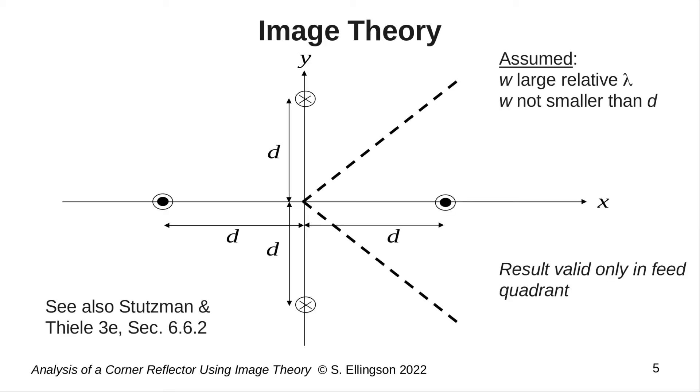Okay, so here's how we do this problem using image theory. Image theory tells us to replace the corner reflector with three additional line sources, as shown here. Each line source is the same distance from the origin, and the upper and lower line sources are oriented in the reverse direction from the feed and the leftmost line source.